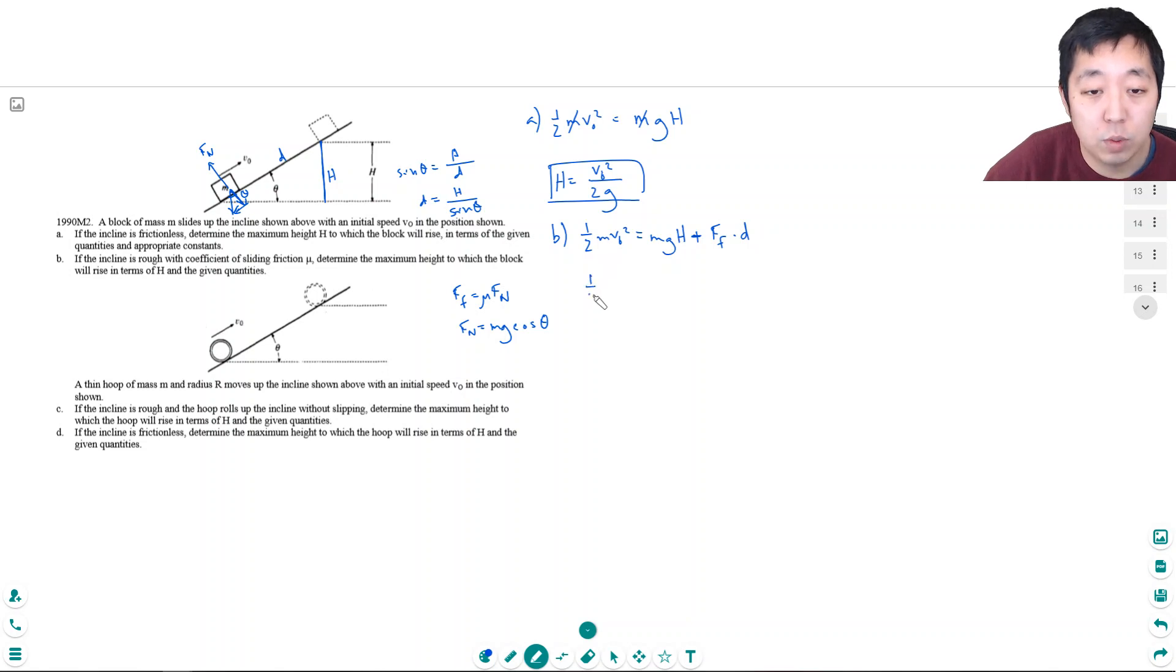So then basically I have 1 half m v0 squared is equal to mgh plus the force of friction which is mu mg cosine theta, times the distance d, which we found was h over sin theta. Okay, I can divide by m, and I can factor out an h and a g. So this is gh times 1 plus, what's left over here in the factor is cosine over sin theta, that's cotangent theta.